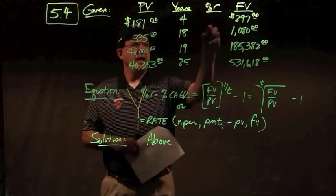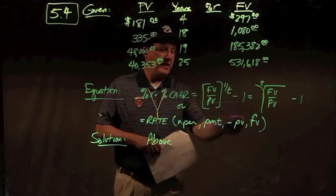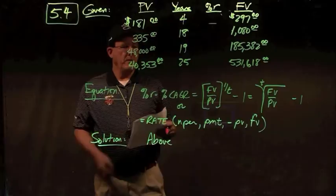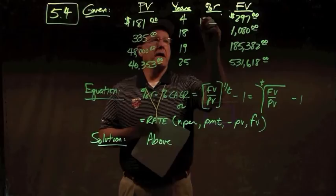In Excel you can type =RATE(nper, payment, -PV, FV). Doing the basic math: Future Value $297 divided by $184 to the 1/4 power gives an interest rate of 13.18%.